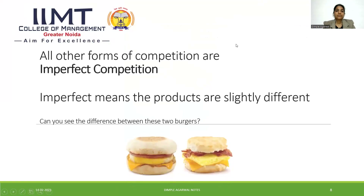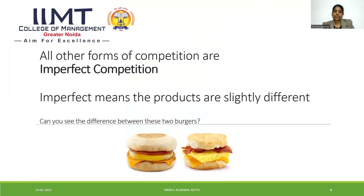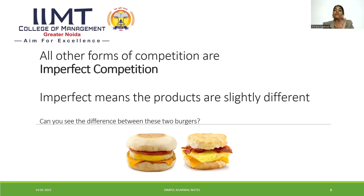Moving towards imperfect competition: after perfect competition, every other competition is imperfect competition. Imperfect itself means that products are slightly different — they are differentiated products, and you can distinguish between them by your naked eye. For example, you can distinguish between these two burgers — the crust is different, the patty is different, the cheese is different. These two burgers can be differentiated by the naked eye. In perfect competition, we have homogeneous or identical products.